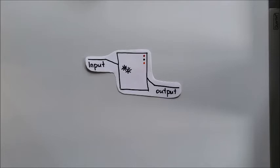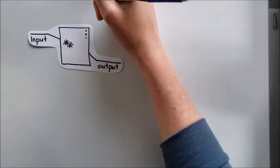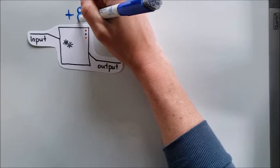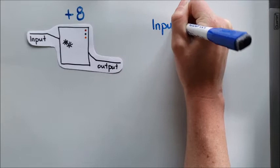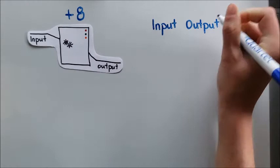The first machine that we talk about in our notes takes whatever you put into it and it adds eight. When we are dealing with input-output machines we often like to organize in terms of a table. So we will have our input and our output.